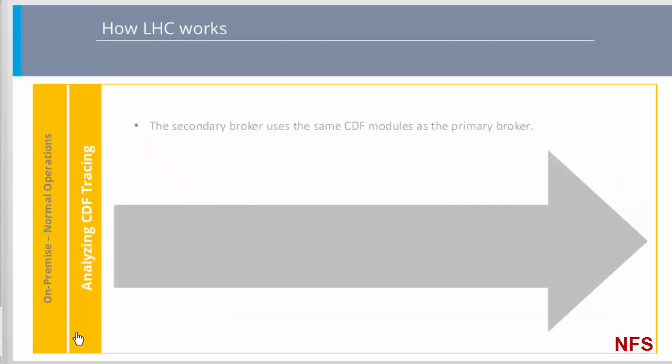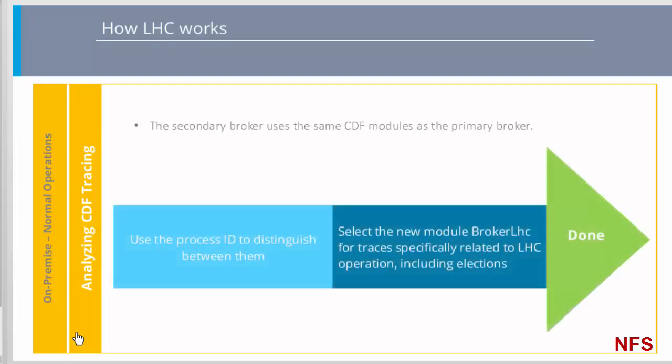How can we troubleshoot LHC during outages by analyzing CDF traces? Because primary and secondary brokers share the same brokering logic, use the process ID to distinguish between their respective roles in a CDF trace. Since the LHC does more than just taking over the brokering role from the primary broker, there are other tasks that can be identified in CDF traces, for instance secondary controller elections taking place, who's winning them, whether the secondary broker has been asked to take over, whether it succeeded or not, and whether any errors were thrown. Include the new Broker LHS module in CDF tracing to provide additional detail. Please refer to the Local Host Cache document in the Additional Resources pane for a more complete understanding of the new Local Host Cache feature, including design considerations and requirements.